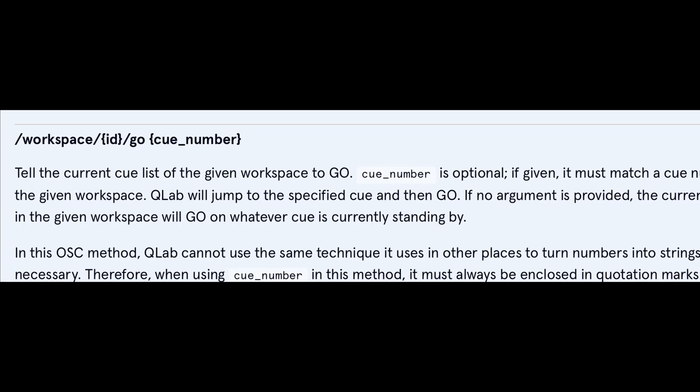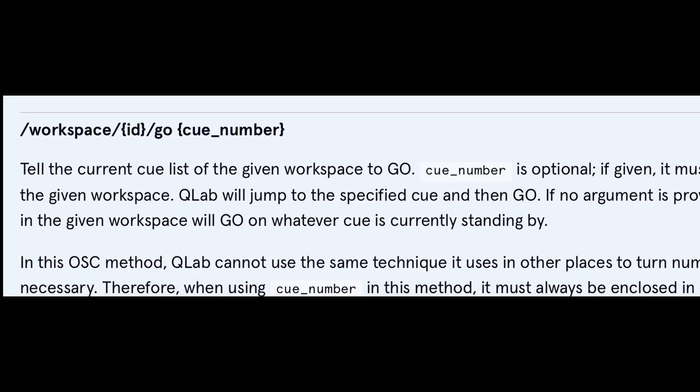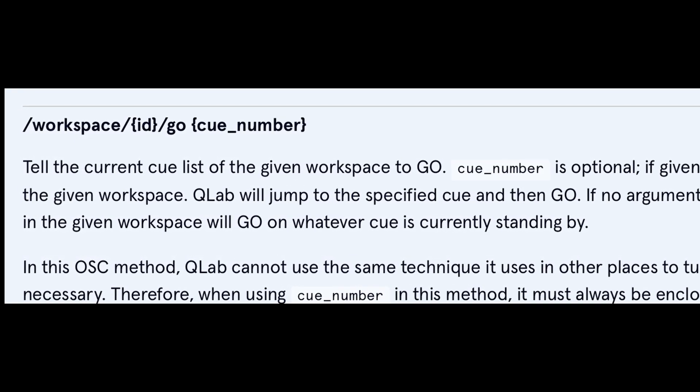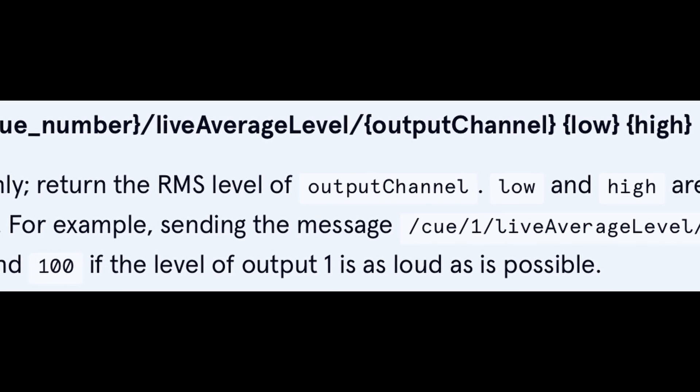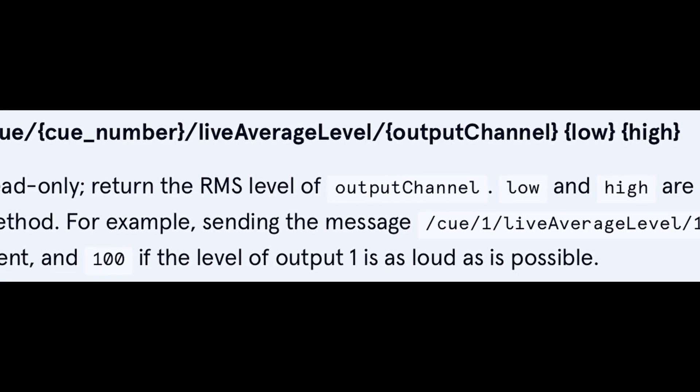OSC also has the ability to send a data payload. Sticking with our QLab example, what if we wanted to play a certain cue number? We would keep the address the exact same. However, we could add a space and then type what cue number we wanted to play. We are also able to keep adding as many pieces of data as we want. For example, in QLab, if we wanted to control the live average level for a cue, we could provide both the low value and the high value.